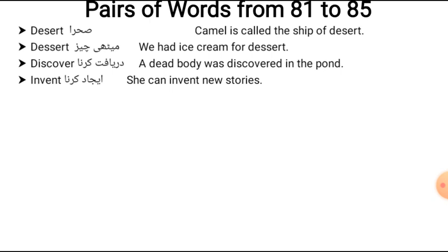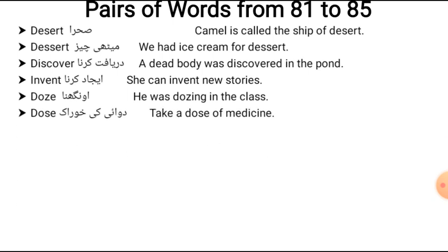Next pair: 'doze' and 'dose.' Doze means to be in a drowsy, sleepy state — 'He was dozing in the class.' Dose refers to the quantity of medicine — 'Take a dose of medicine.'